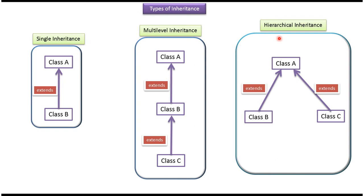The third one is Hierarchical Inheritance. In Hierarchical Inheritance, more than two classes extend the same class. In this example, Class B and Class C extend Class A.